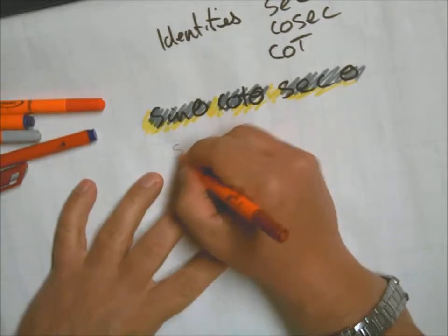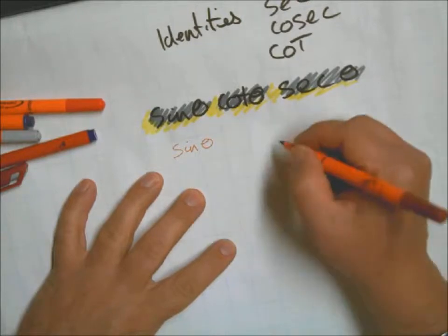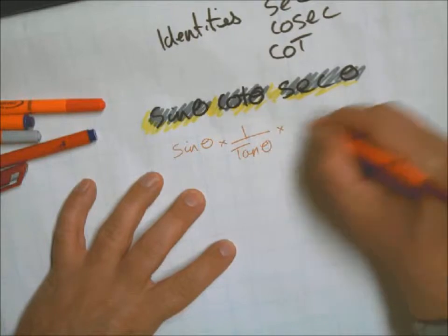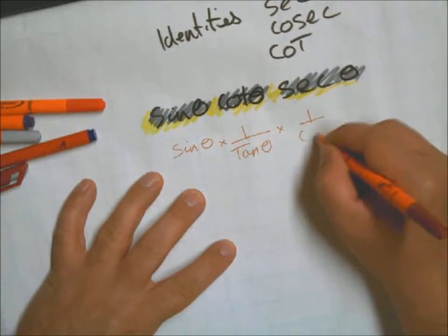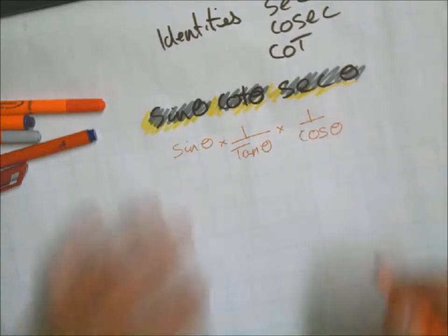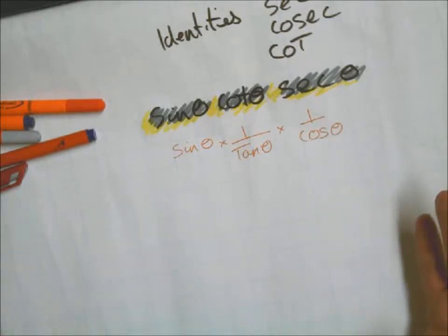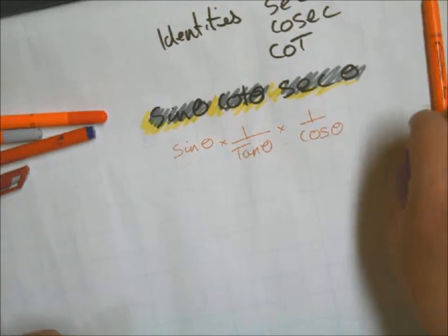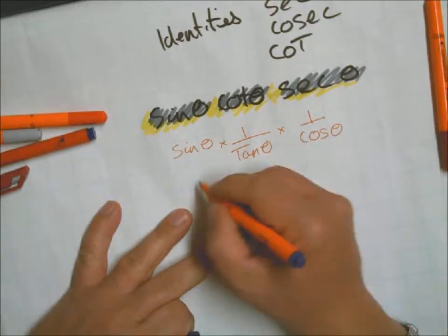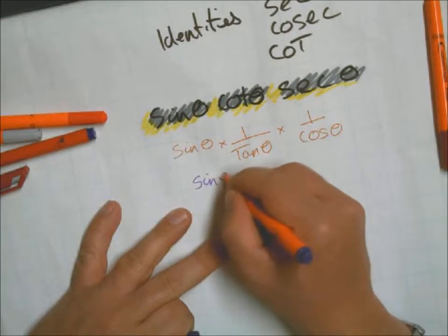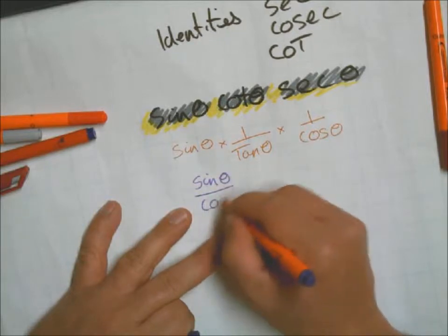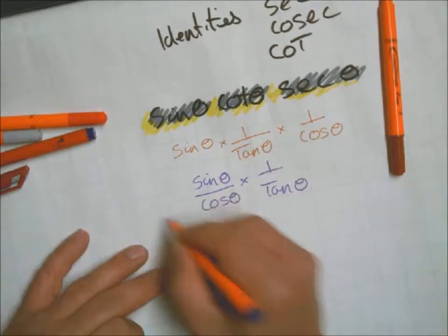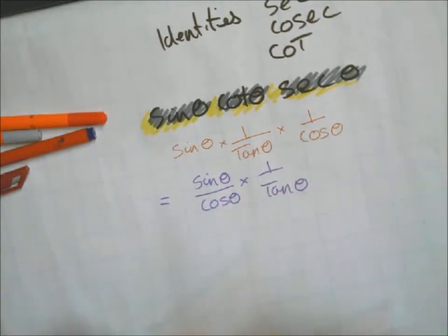We've got our sine theta, and we're used to that. Our cot, let's turn that into one over tan, and then our sec is one over cos. Now we're looking to see if we can manipulate these around, and we can see there could be something here because sine theta over cos theta is now starting to look a little bit more interesting.